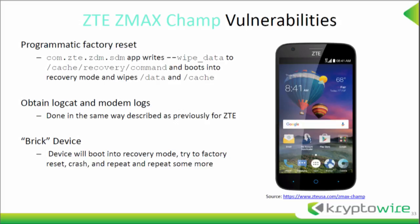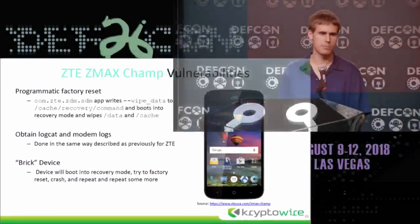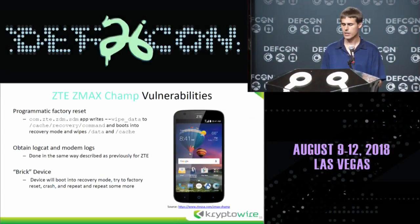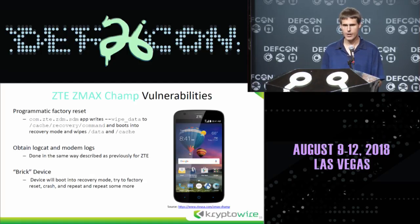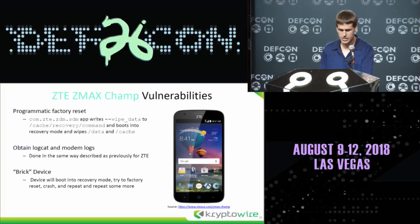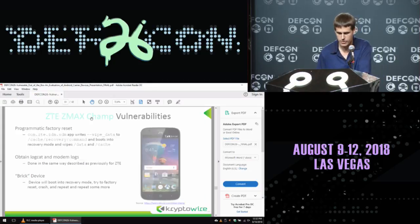Moving on to the ZTE ZMAX Champ device — there's a pre-installed platform app that will allow any application on the device to cause a factory reset, resulting in potential data loss. There's also a way to get the logcat logs and modem logs as described previously. Additionally, with a standard zero-permission third-party app using just one line of code, you can make this device non-functional by sending a broadcast intent to a specific app.